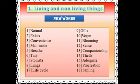Next one is manmade. Fifth one: breathe. Breathe means the intake and outgoing of air through our breathing organ. Sixth one: tiny. Tiny means very small. Seventh one: stomata — stomata is the breathing organ of a plant.